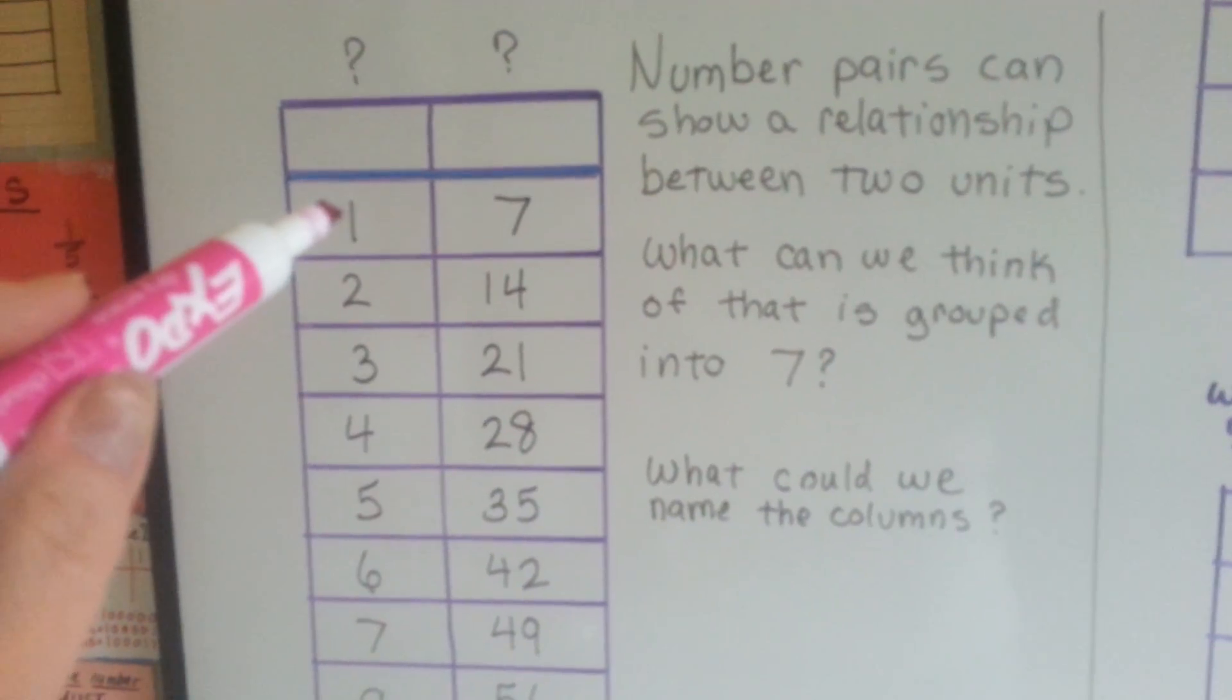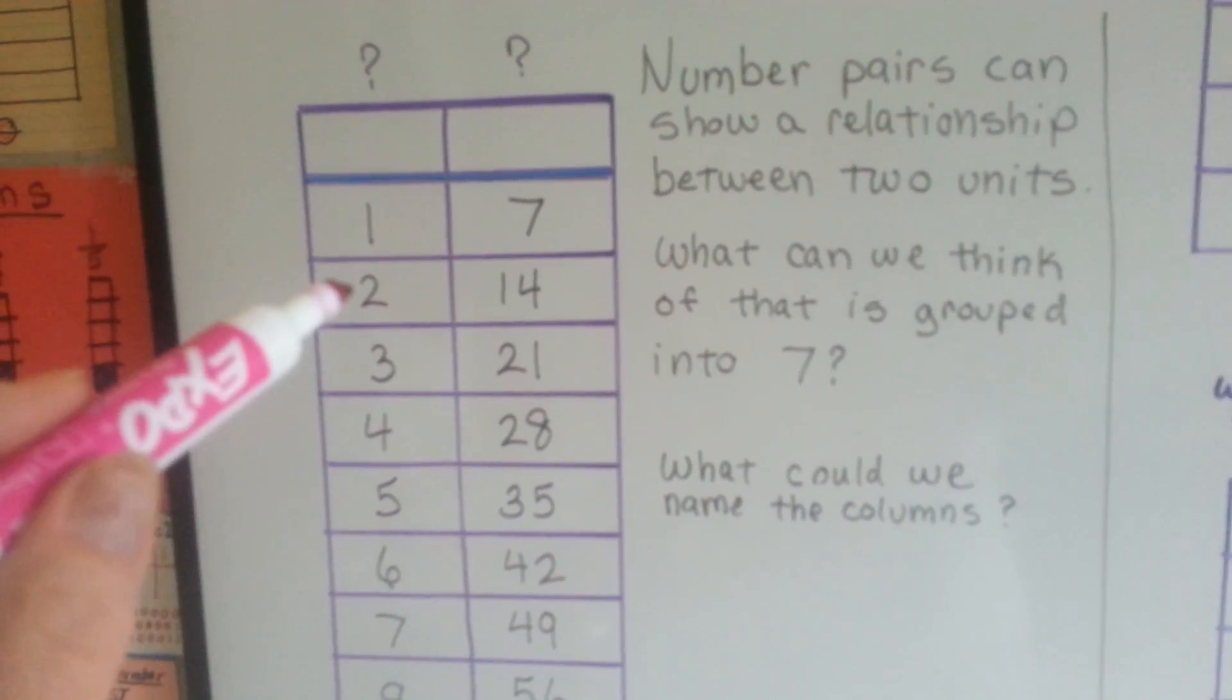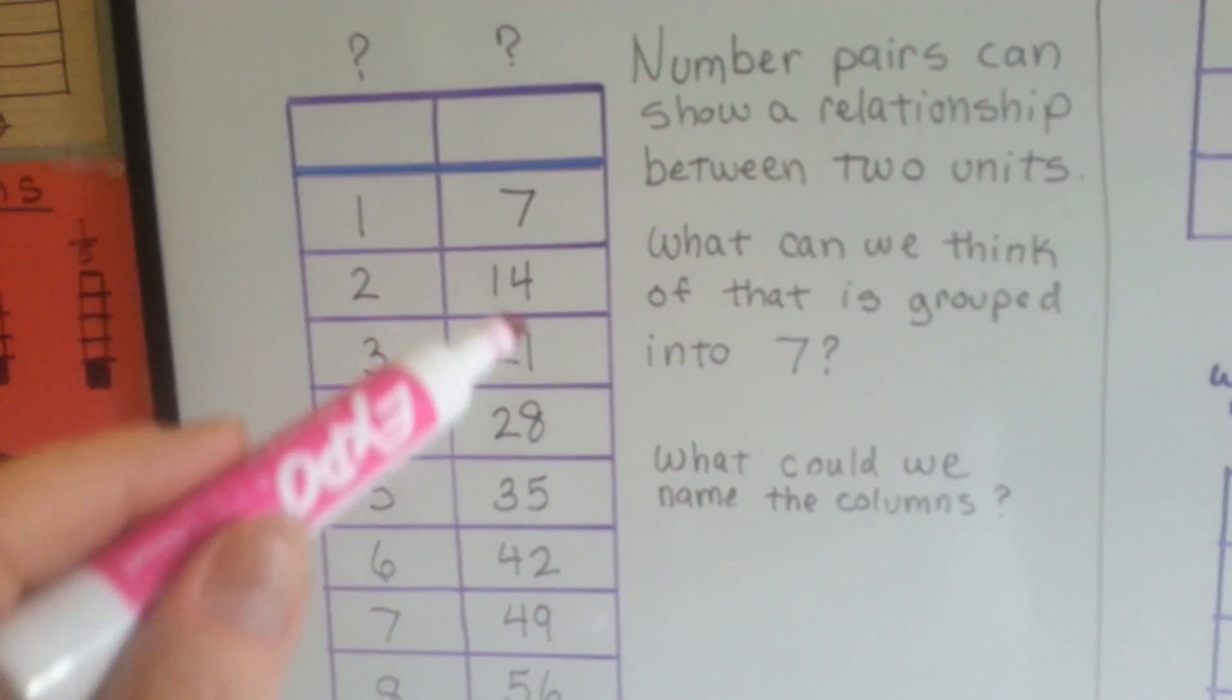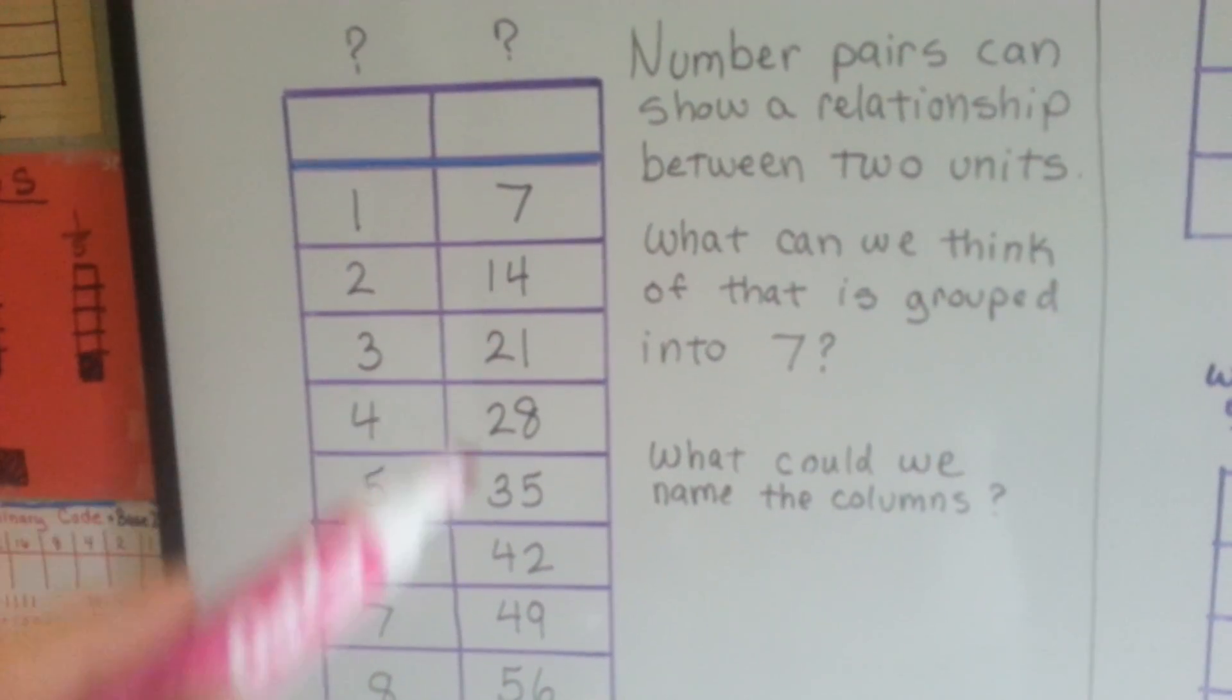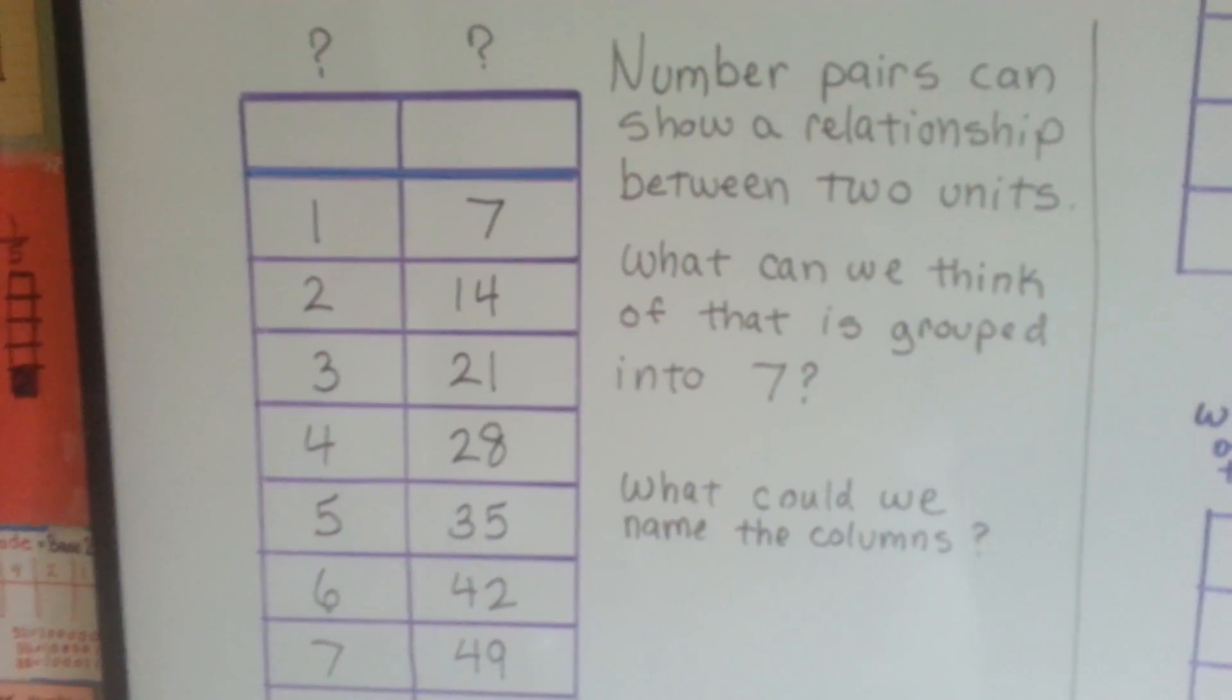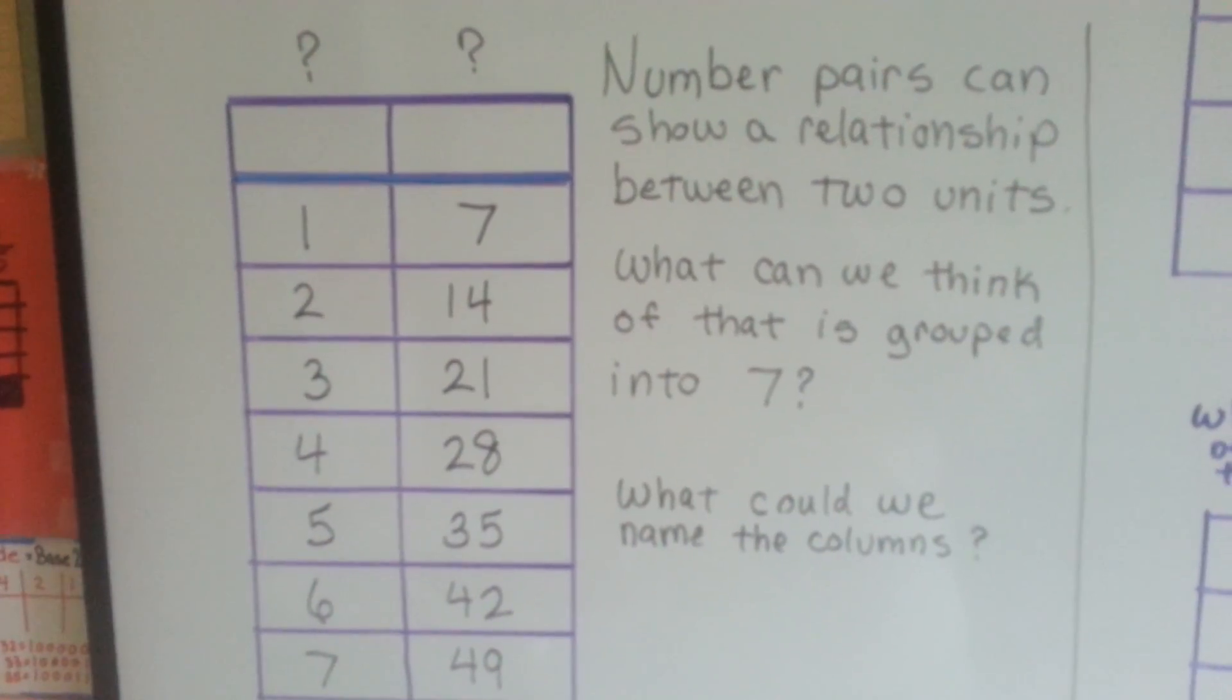It says one of something is seven of another. If we have two of them, then we have 14 of these things. If we have three of them, we have 21 of them. What can you think of that is grouped into sevens?